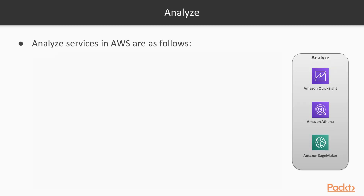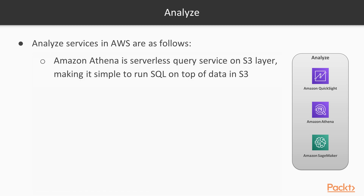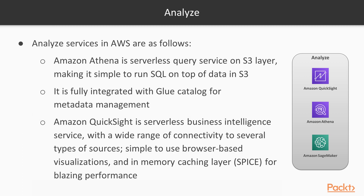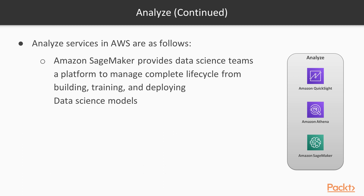Now let's look at how to analyze this data once it's in the data lake. Amazon Athena is a serverless query service on the S3 layer, making it simple to run SQL on top of S3. It's fully integrated with the Glue catalog for metadata management. Amazon QuickSight is a serverless business intelligence service with a wide range of connectivity options, as well as simple browser-based visualizations and a powerful in-memory caching layer. Amazon SageMaker provides data science teams a platform to manage the complete lifecycle from building the model, training the model, and deploying the model to production.